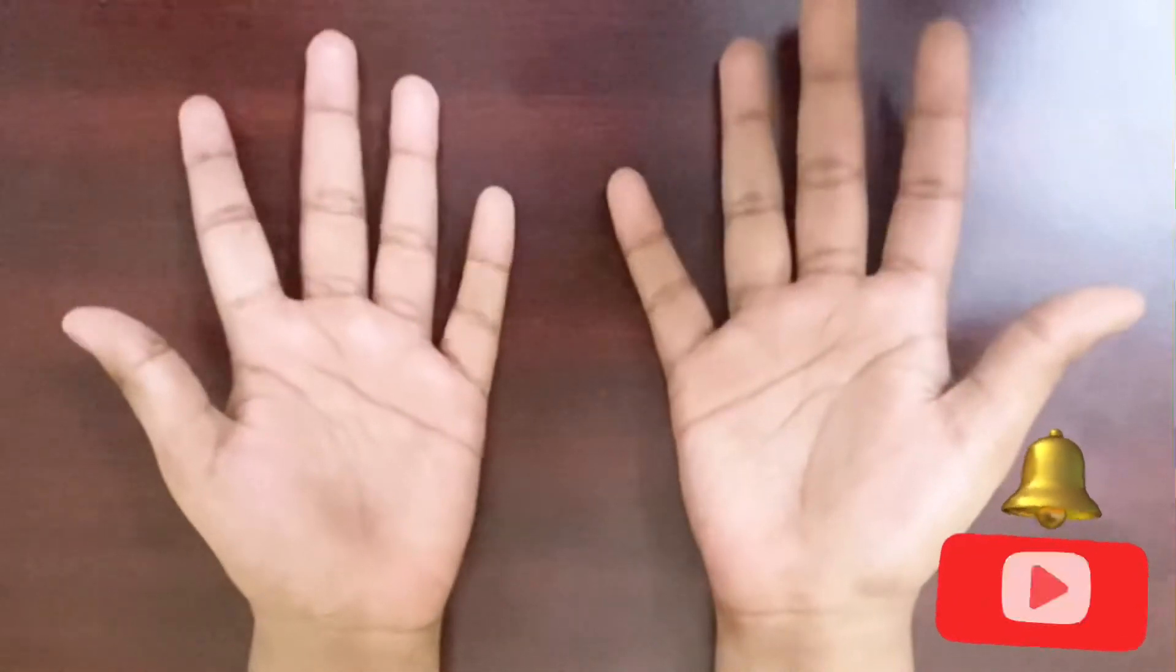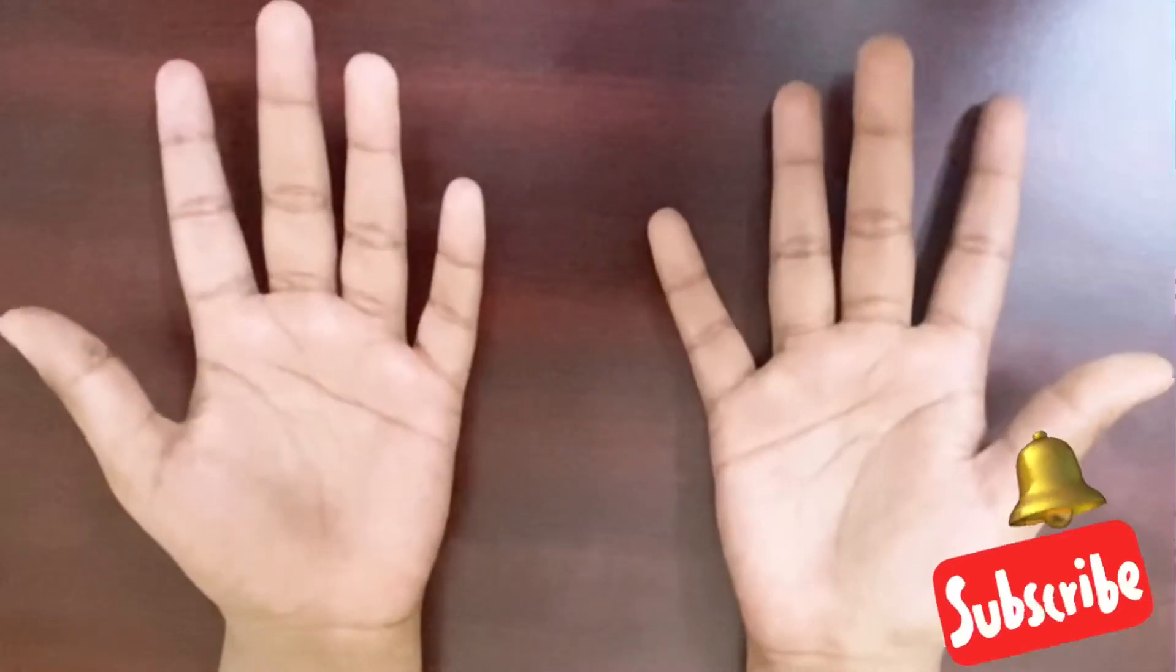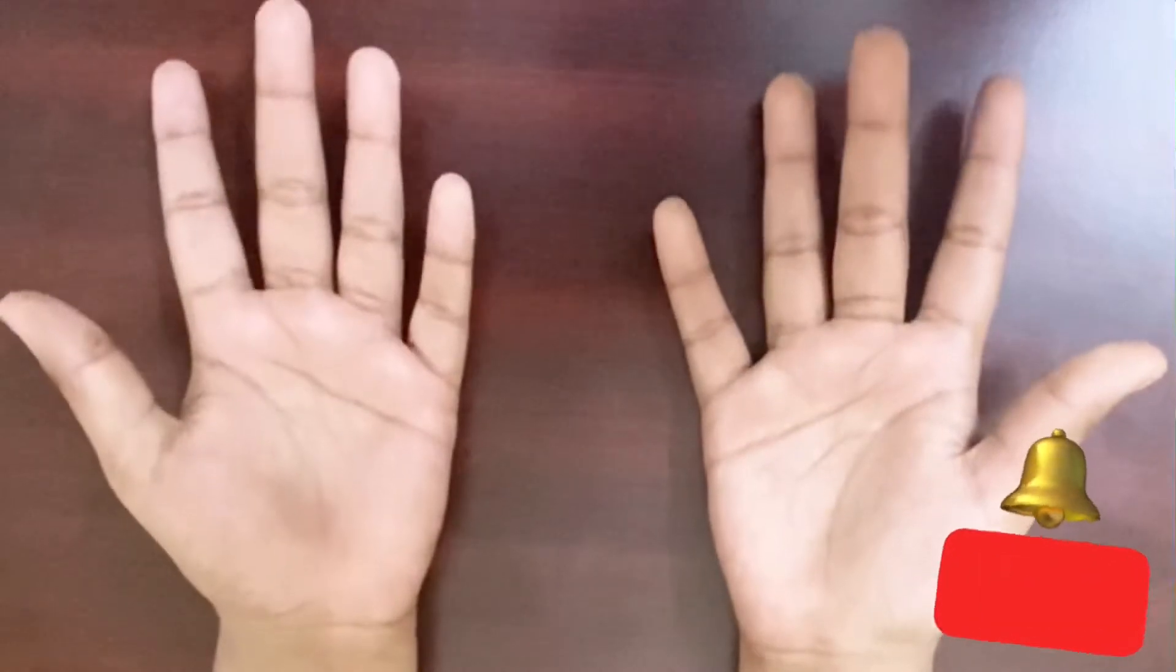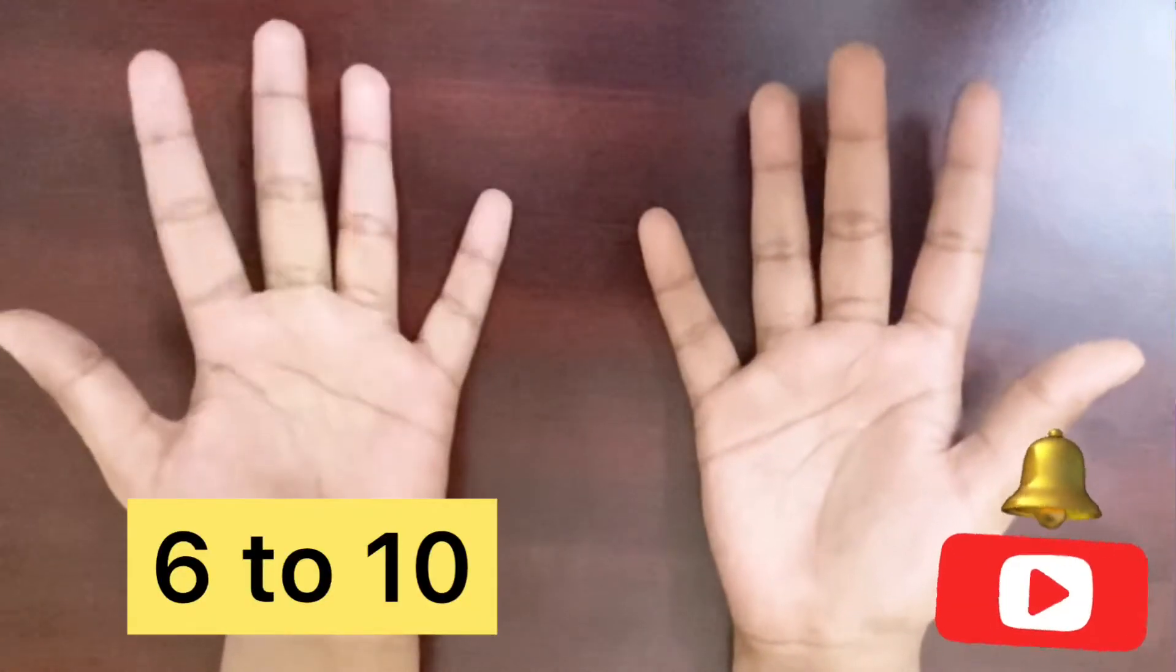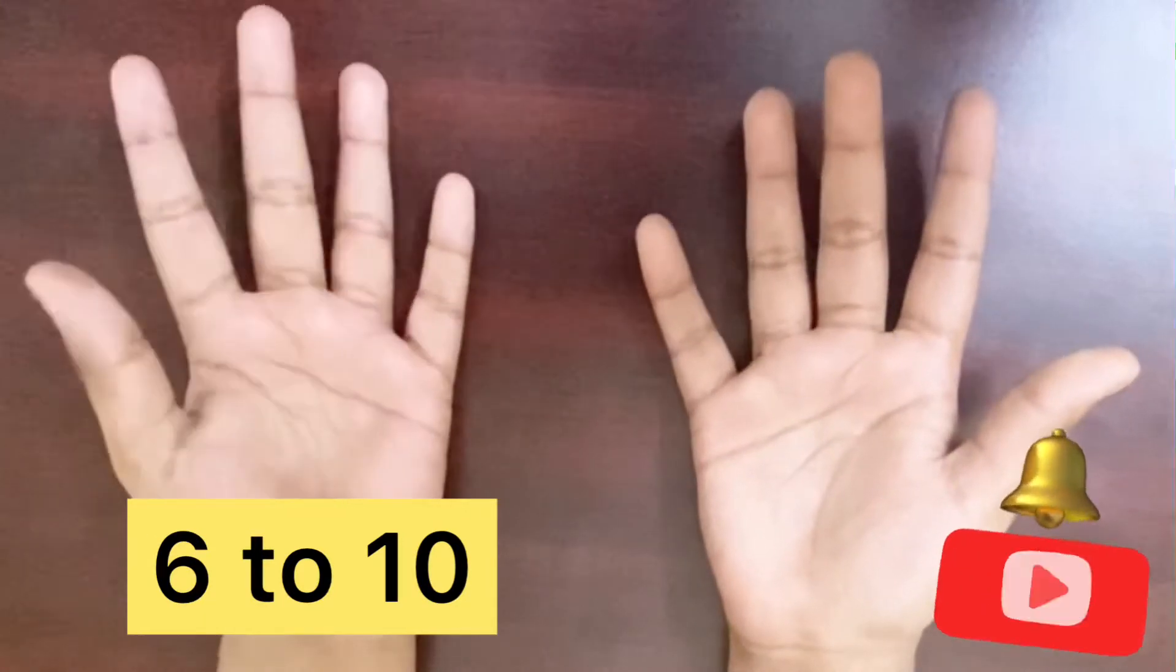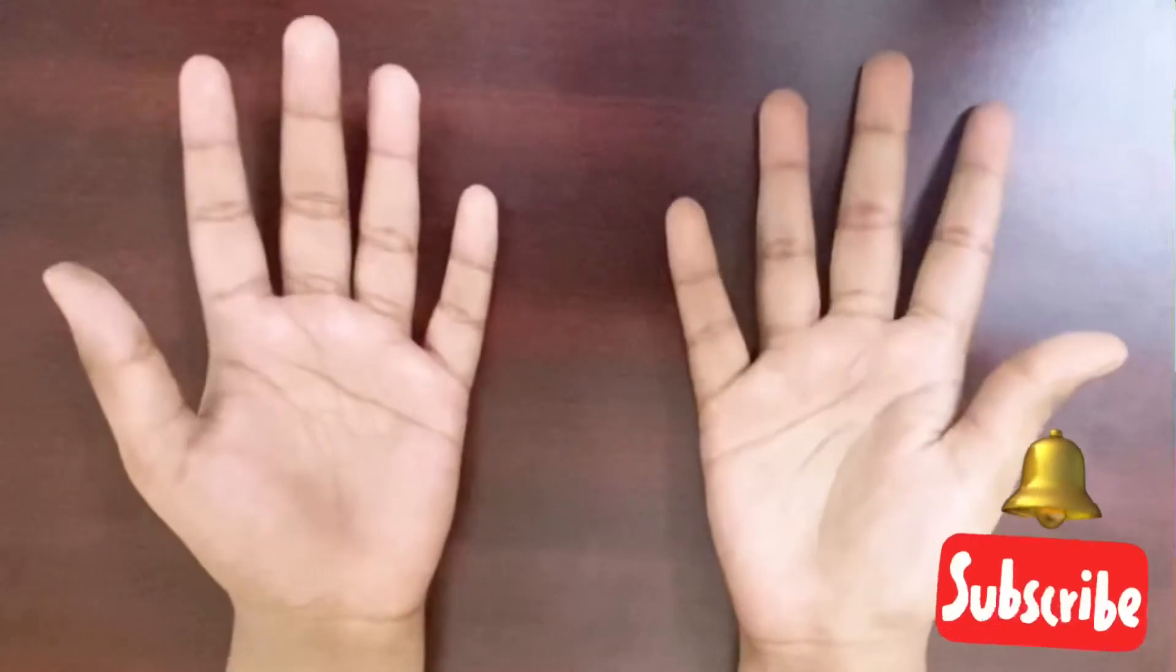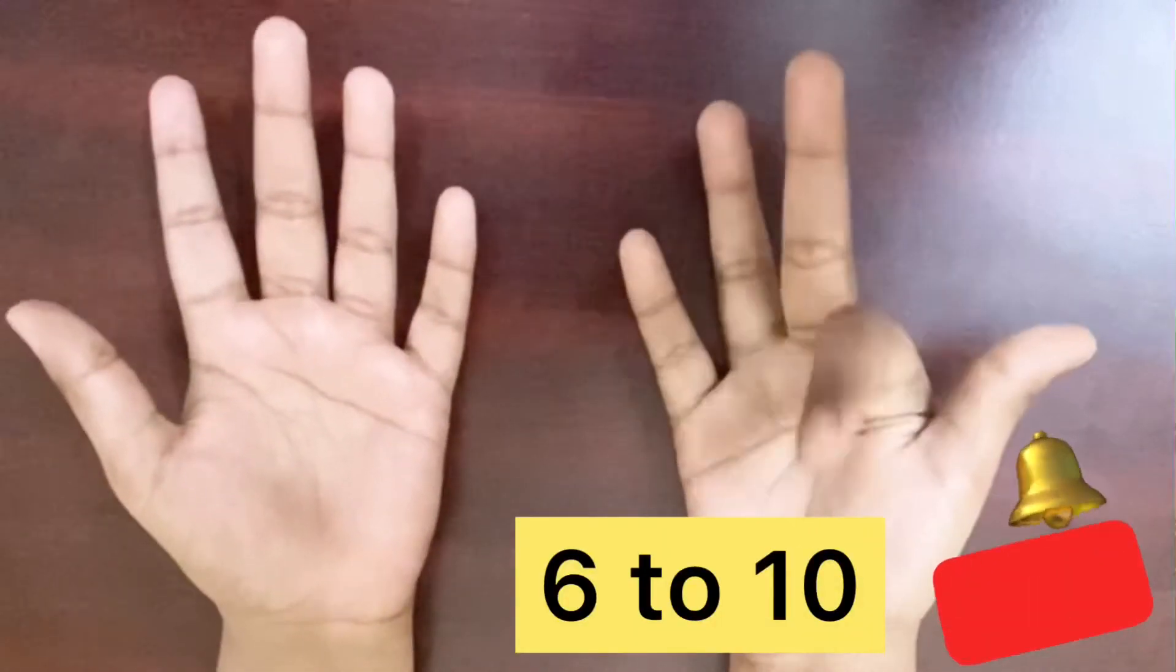First, open both of your hands in front of you. Now, name the left hand little finger as 6 and the thumb finger as 10. 6, 7, 8, 9, and 10. Repeat the same on your right hand fingers too. 6, 7, 8, 9, and 10.